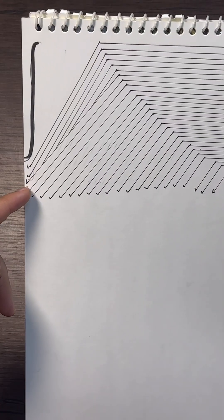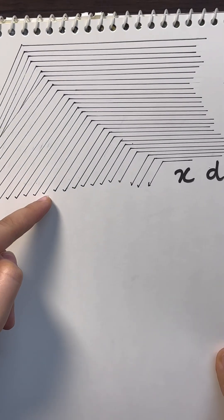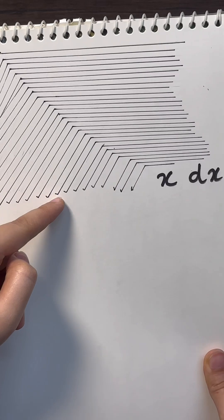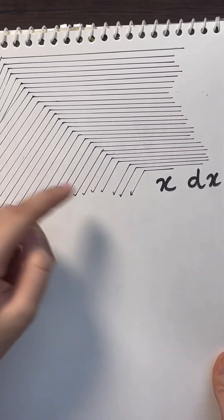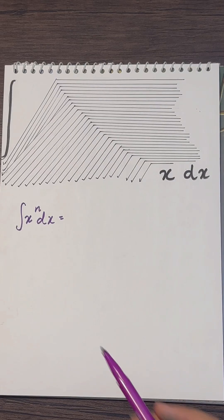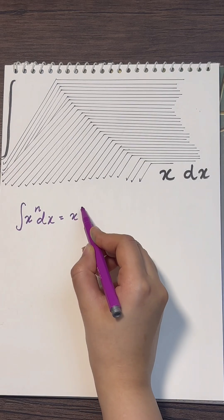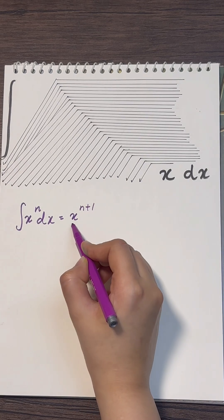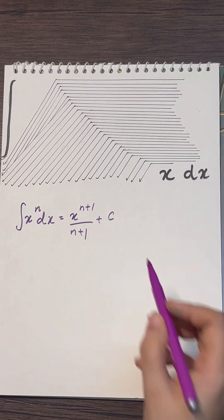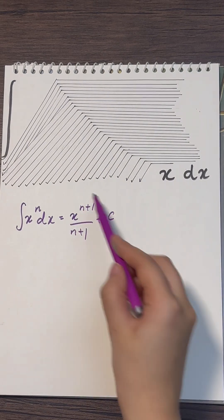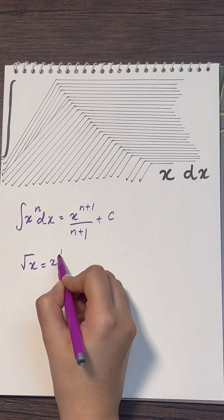Do you know what's the integral of root root root root... (30 nested roots of x)? So all I need to do is re-represent all of this as powers.